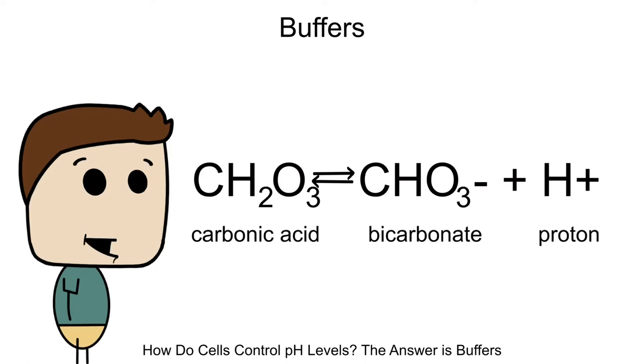So in the case of blood, if the proton or hydrogen concentrations happen to increase, these protons would react with bicarbonate ions and that would result in a reverse reaction back to carbonic acid. Now, this sort of sounds a little confusing, right?